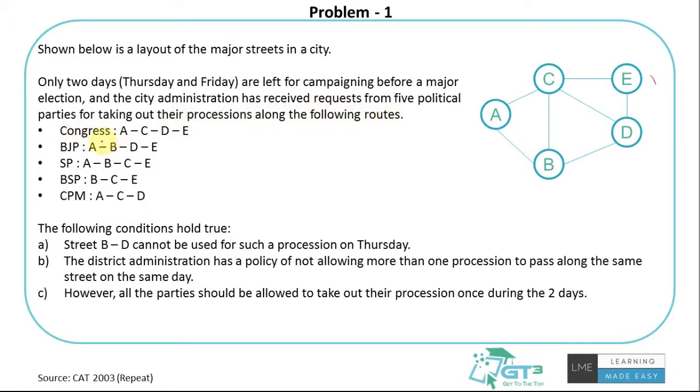Congress is planning to do A-C-D-E. BJP is A-B-D-E. SP is A-B-C-E. BSP is B-C-E, and CPM is A-C-E. They have given us some conditions.